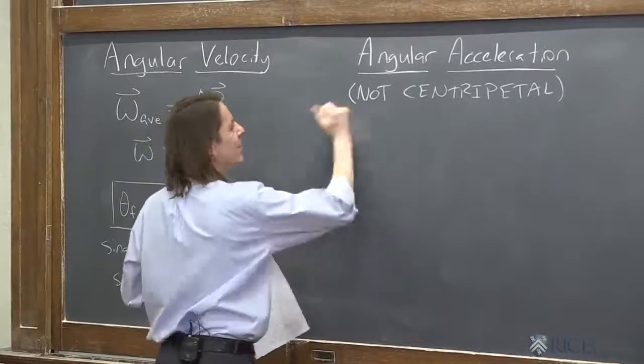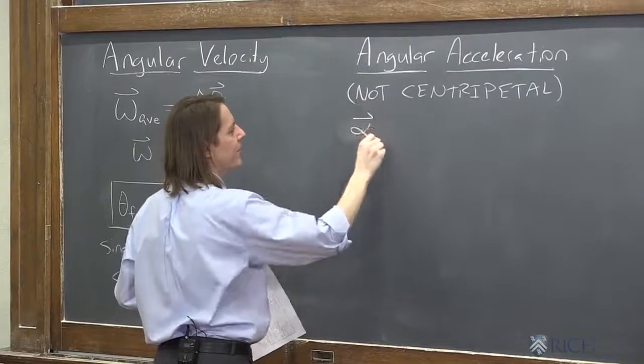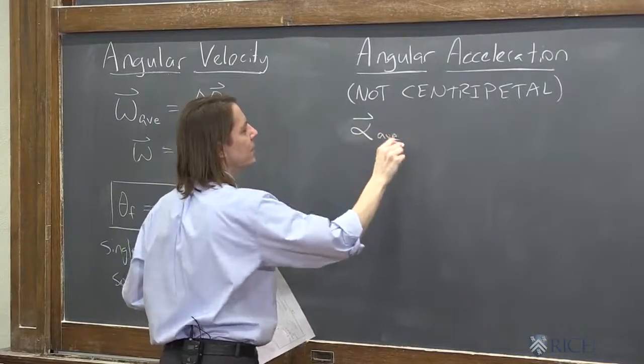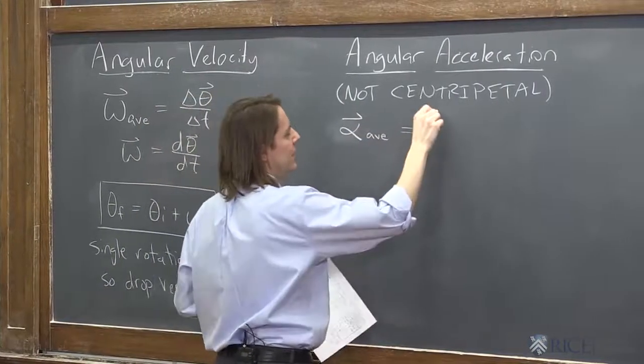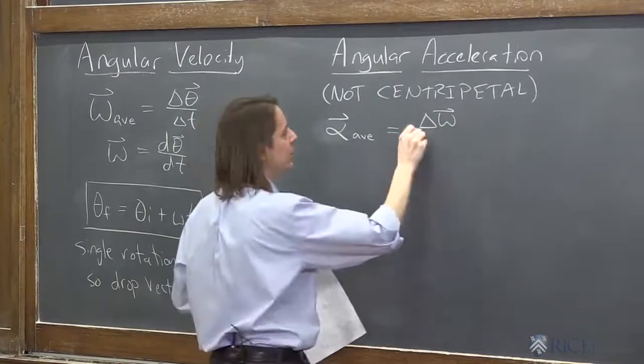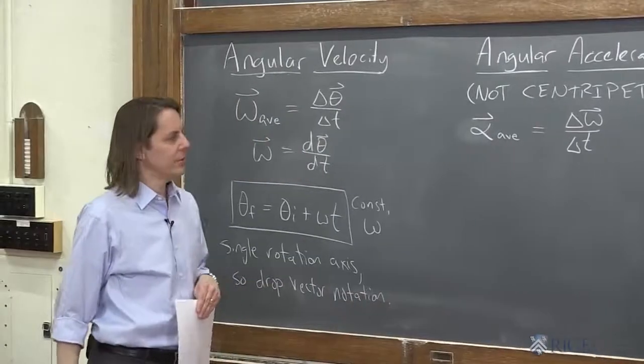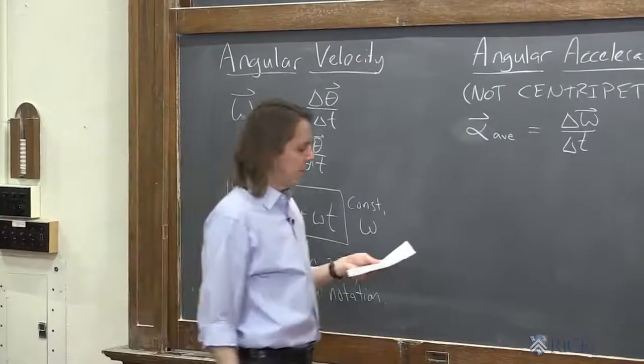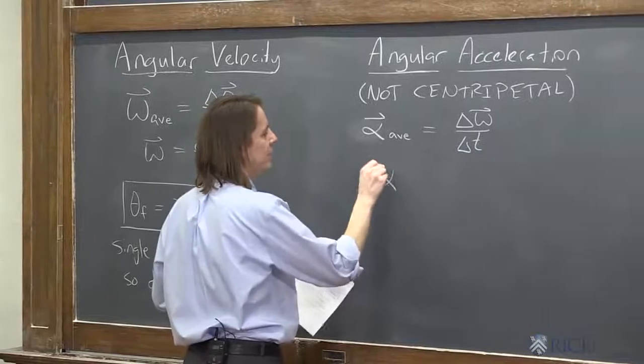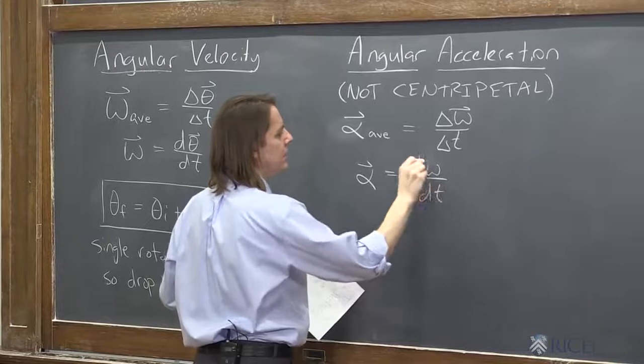So we use the symbol alpha to represent angular acceleration. It is a vector. And for now, let's look at the average alpha. Now, it's delta omega, omega final minus omega initial over delta t. Just like translational acceleration. And we can also say the instantaneous alpha is the derivative, d omega dt.